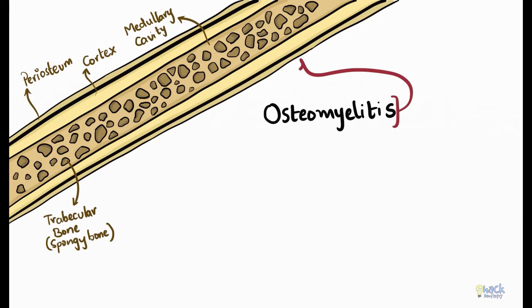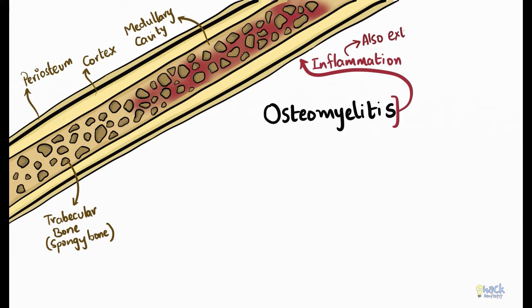Osteomyelitis refers to the inflammation of the medullary portion or the marrow space of the bone. But in a broader sense, osteomyelitis is used to describe an inflammatory process affecting the marrow and extending to the cortex as well as the periosteum of the bone.